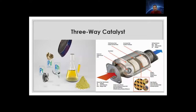The three-way catalyst helps in converting harmful substances contained in automotive exhaust: hydrocarbons, carbon monoxide, and nitrogen oxides. The hydrocarbons are oxidized to water and carbon dioxide; carbon monoxide is oxidized to carbon dioxide; and nitrogen oxides are reduced to nitrogen gas. The key active components used in this catalytic converter are platinum, palladium, and rhodium.